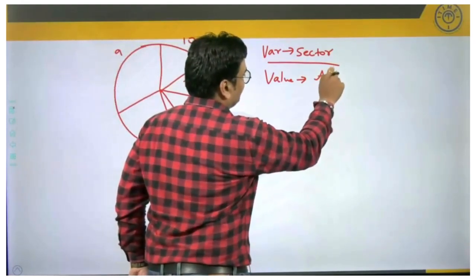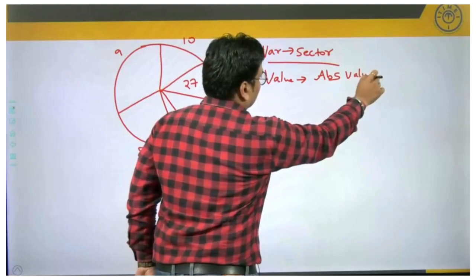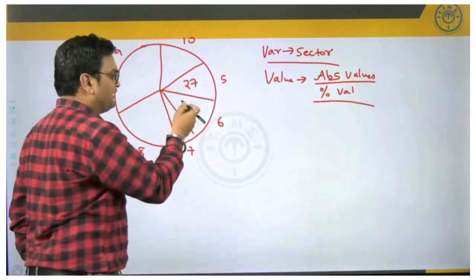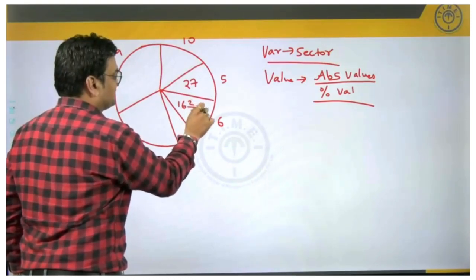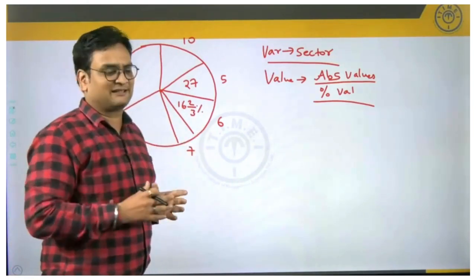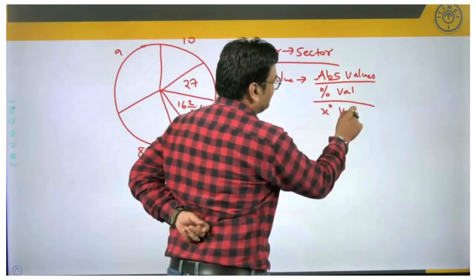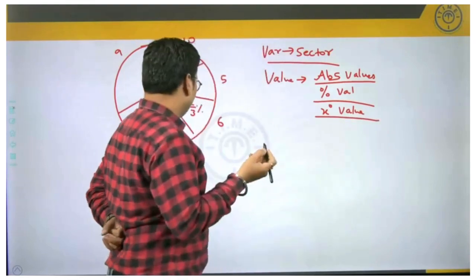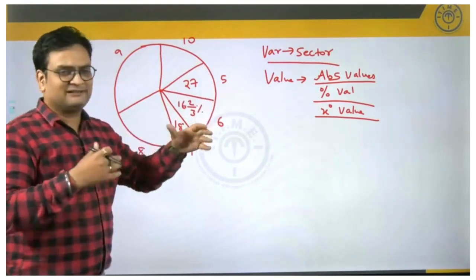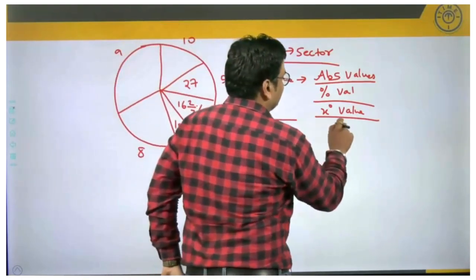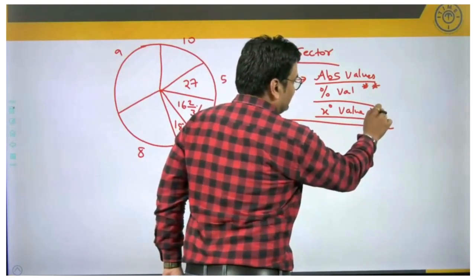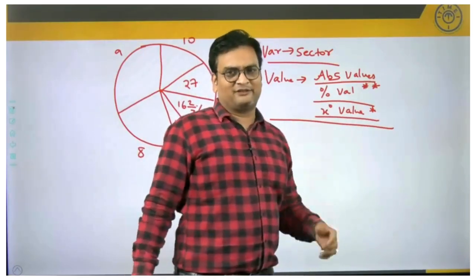The second way in which values can be given is in terms of percentages. For example, instead of giving exact values, I may say class 6 had 16 and 2/3 percent of the total strength. The value could also be given in terms of degrees — for example, class 7 is 18 degrees. Percentage values are most common, followed by degrees, and almost rarely are absolute values given.